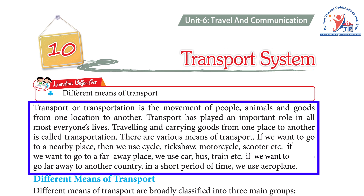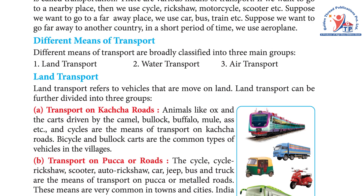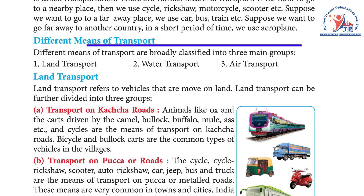If we want to go to a nearby place, then we use a cycle, rickshaw, motorcycle, scooter, etc. If we want to go to a faraway place, we use a car, bus, train, etc. If we want to go far away to another country in a short period of time, we use an aeroplane.